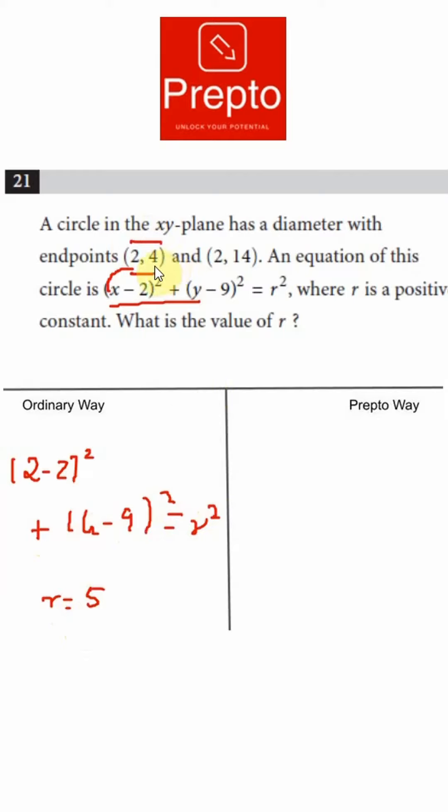In the Prepto way, you can just work with the diameter as is and this is so easy because the diameter has the same x coordinate. It's 2, which means that the distance between these two points which is actually the length of your diameter is the difference in these two numbers which is 10, and hence your radius is going to be half of that which is 5.